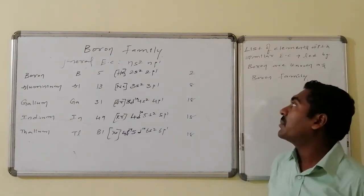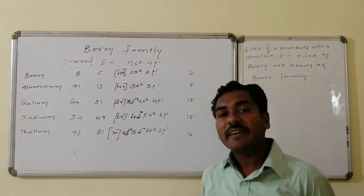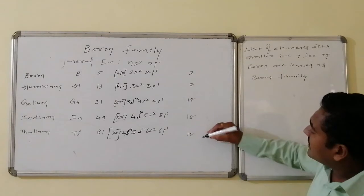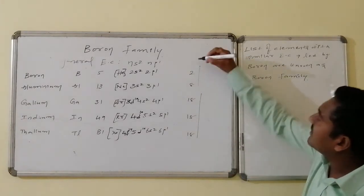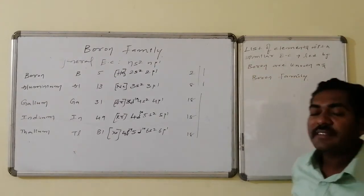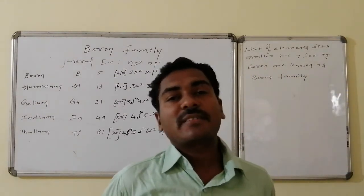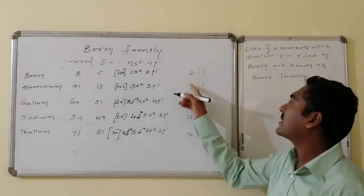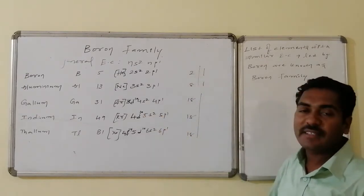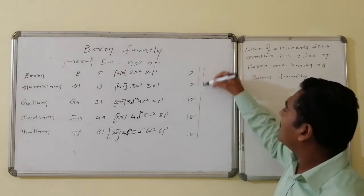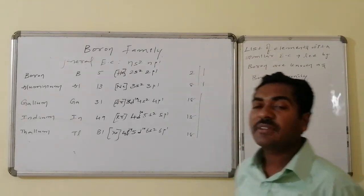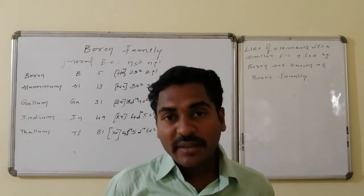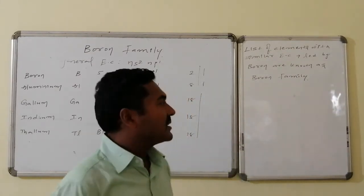In the penultimate shell, Boron has only 2 electrons and Aluminium has 8 electrons, whereas Gallium, Indium, and Thallium maintain 18 electrons. Due to the different number of electrons in the penultimate shell, though the outermost shell has the same 3 electrons, there is a difference. Boron and Aluminium form one set, and Gallium, Indium, Thallium form another set. Even between Boron and Aluminium there is a difference — Boron has 2 and Aluminium has 8 electrons in the penultimate shell.